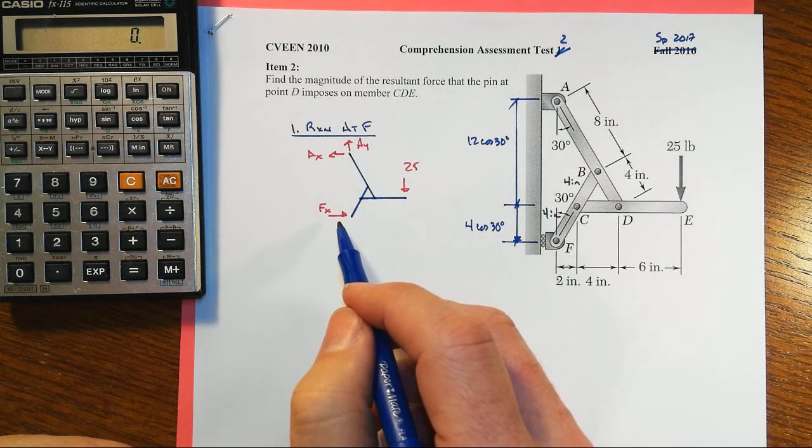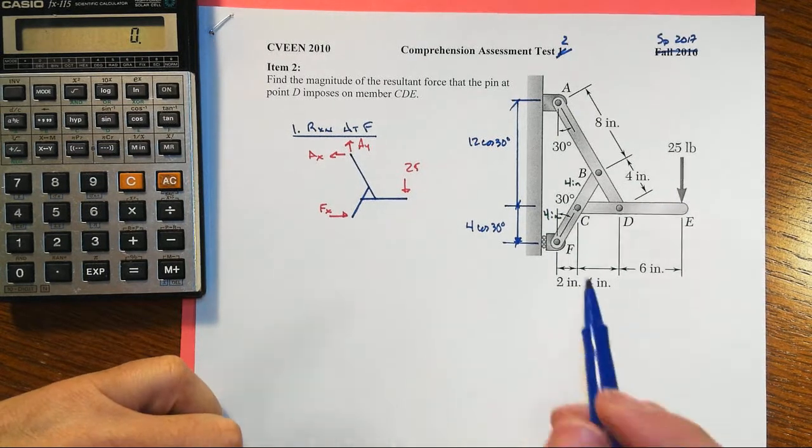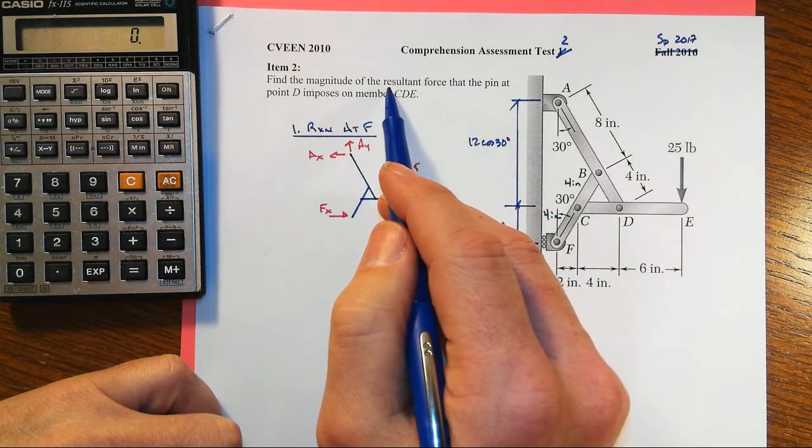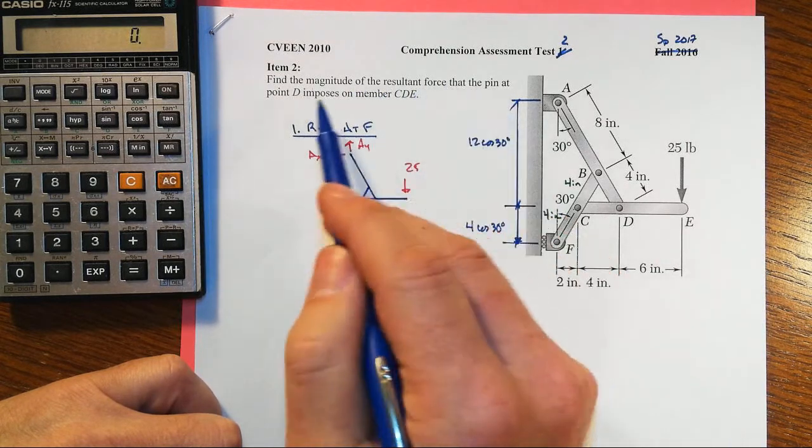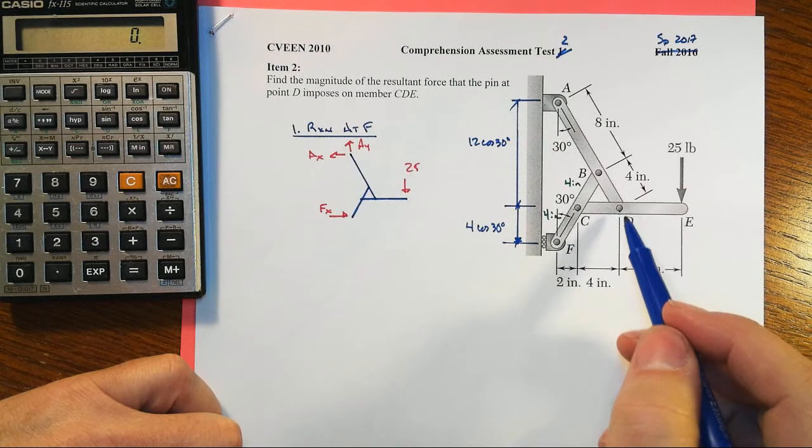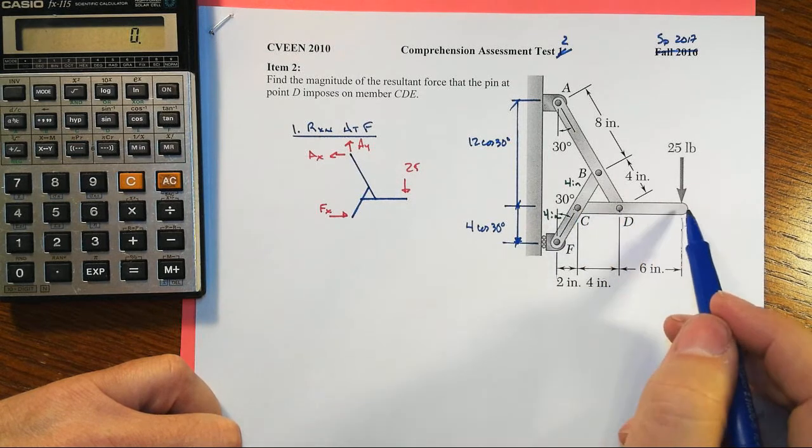Now you don't know that you want that yet. Let's look at what's being asked. We're asked to find the magnitude of the resultant force that the pin at point D imposes on member CDE.